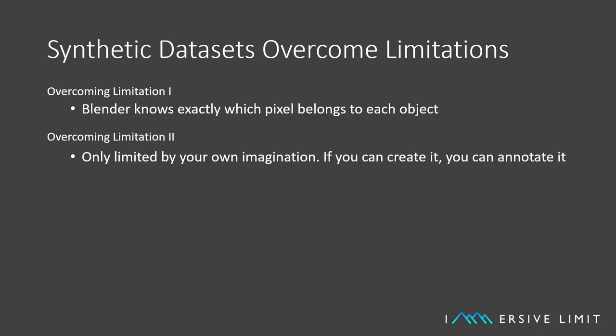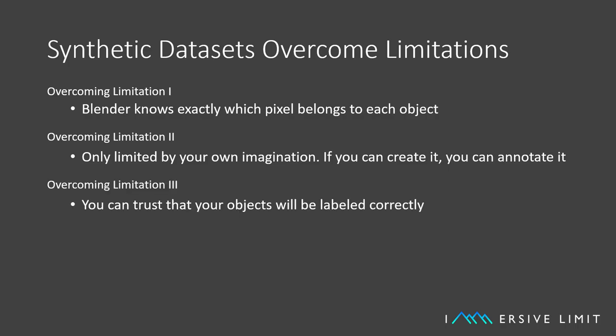Limitation number one was inaccurate and inconsistent annotations. With synthetic images, the software knows exactly what object each pixel belongs to, so it can create flawless annotations. Limitation number two was nonspecificity. With synthetic images, you can specify exactly what appears in your dataset, whether it's a proprietary part that a robot needs to pick up or a set of hand poses that your AI needs to understand. In fact, the thing it needs to detect doesn't even need to exist, as long as you can create a convincing synthetic image of it.